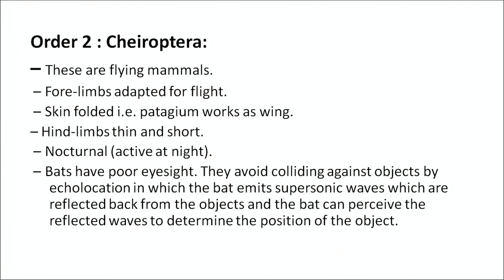The second order is Chiroptera — these are flying animals. Forelimbs are adapted for flight. The skin is folded — the patagium works as a wing. Hind limbs are thin and short. They are nocturnal, meaning they are active at night. Bats have very poor eyesight and avoid colliding against objects by echolocation, in which the bat emits supersonic waves reflected back from objects, allowing the bat to determine the position of the object. This method is similar to radar.